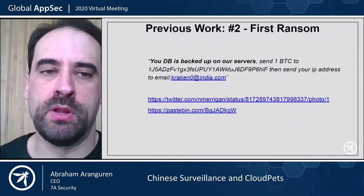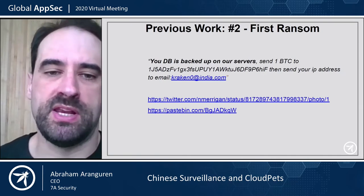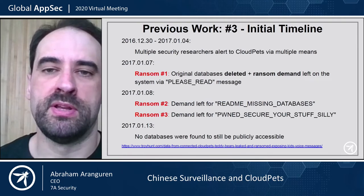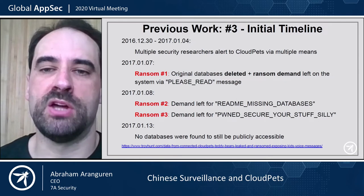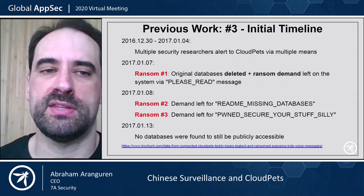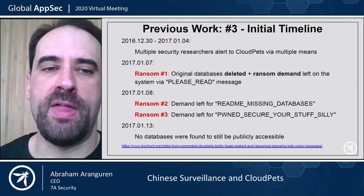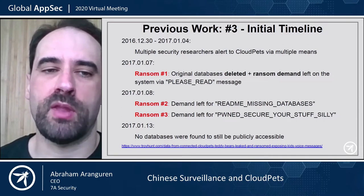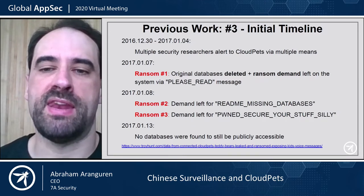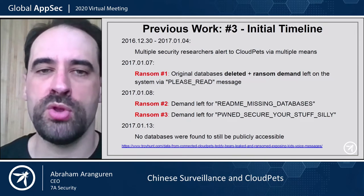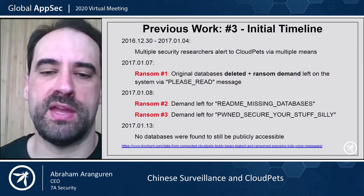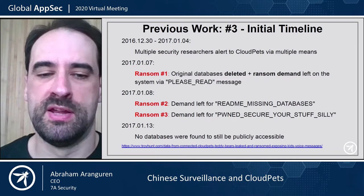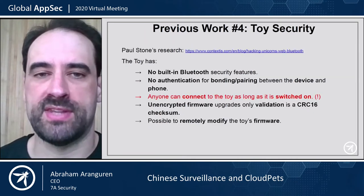The first ransom was left as a message on Pastebin and Twitter. The initial timeline shows multiple security researchers alerting CloudPets through multiple means during these dates. The company did nothing, and then they got the first ransom — the original databases were deleted and a ransom demand left on the system using a 'please read' message. Then two more ransoms afterwards for the same thing. And then on the 13th of January, no databases were found to be publicly accessible anymore.